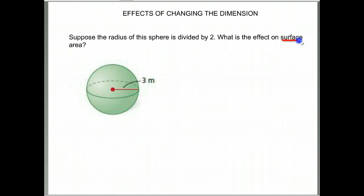So we're saying what happens to the surface area? Well, I'm going to start by writing down the formula for surface area, so I make sure I'm using the correct one. Surface area of a sphere is 4π times radius squared, and then I'm going to try it out on this figure they gave me.